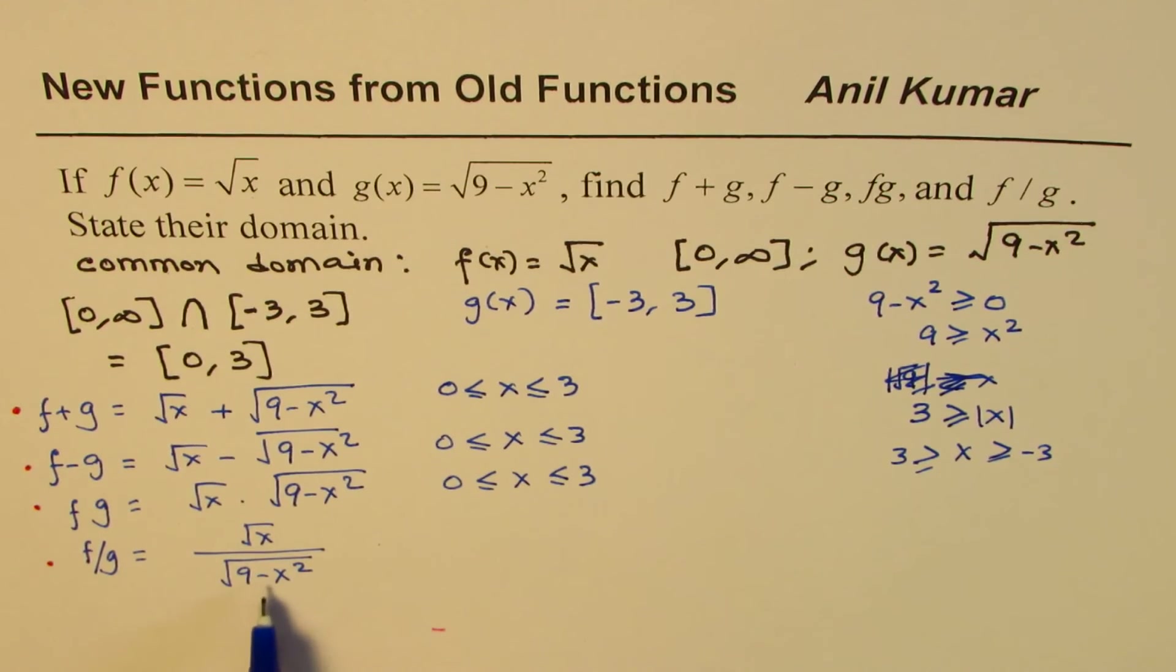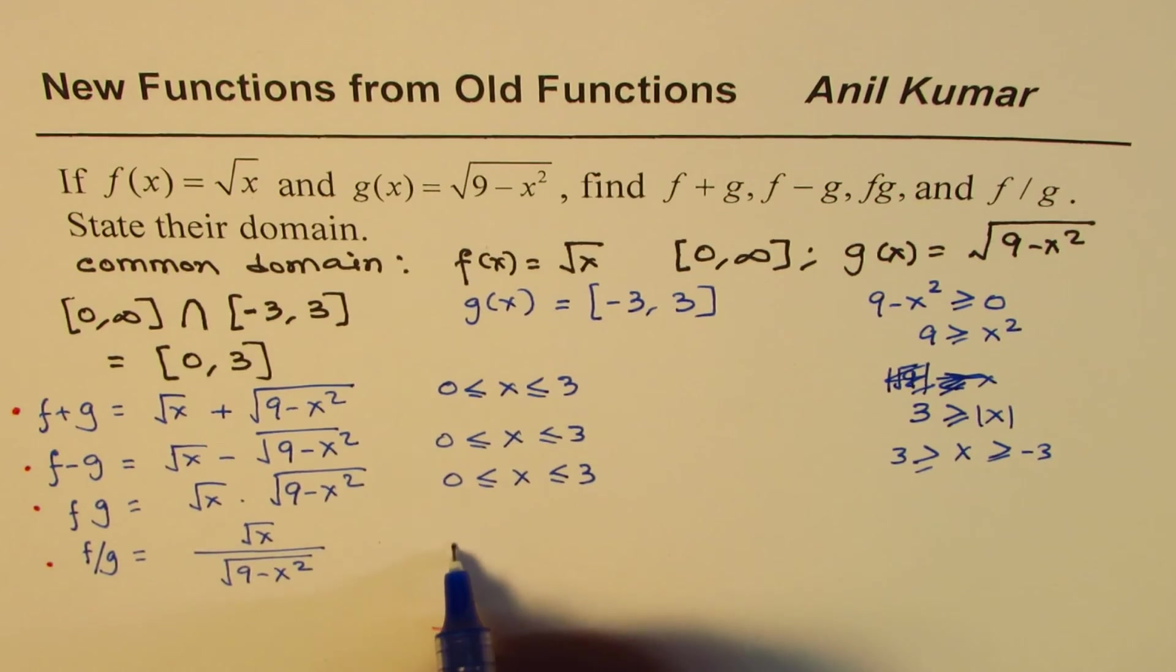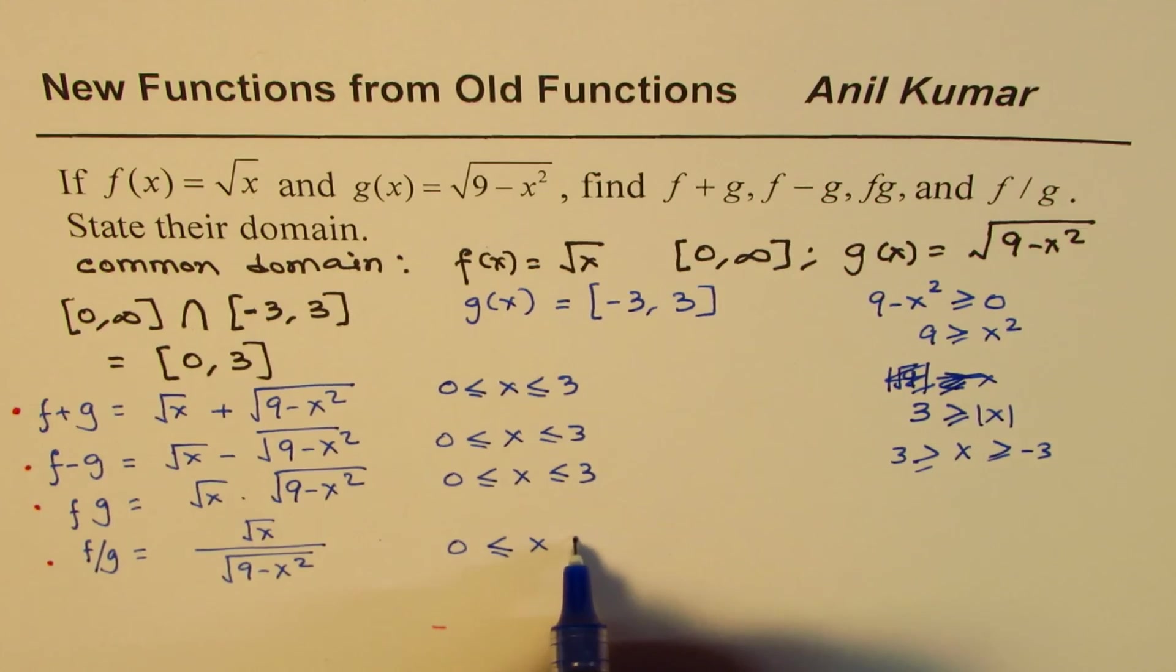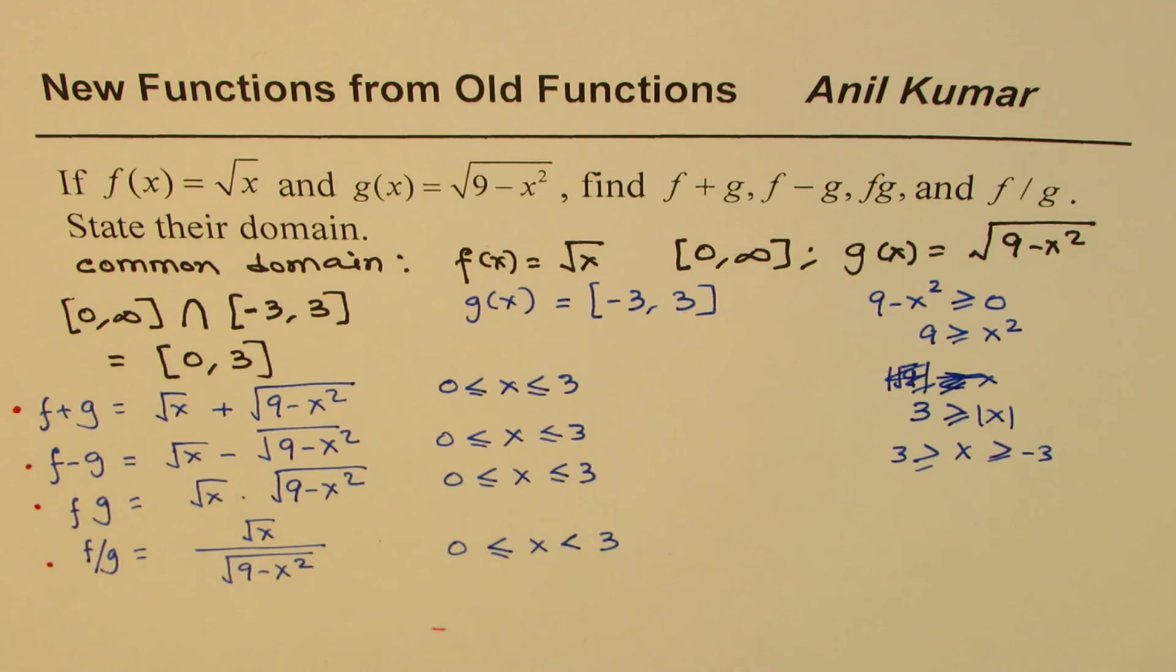Therefore you cannot include plus 3 in this domain. So here the domain will be x is greater than or equal to 0 but less than 3. That is how you could actually find domain of these functions and write down an expression which is a new function by combination of two given functions.